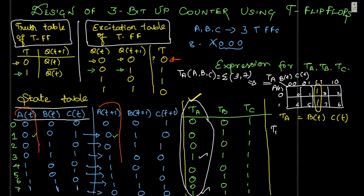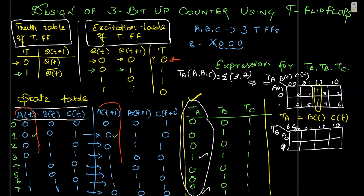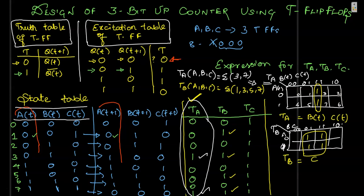Similarly, for TB, drawing the K-map and filling the minterms — which are 1, 3, 5, and 7 — and grouping all ones gives the expression TB = C(t), or simply C.